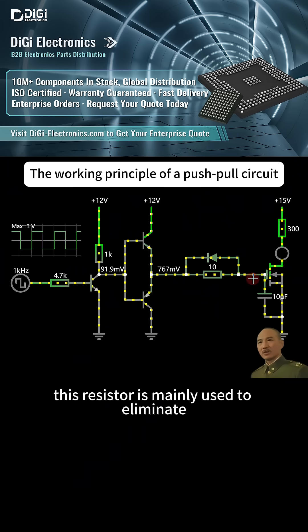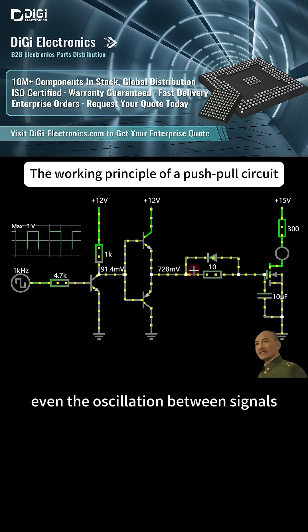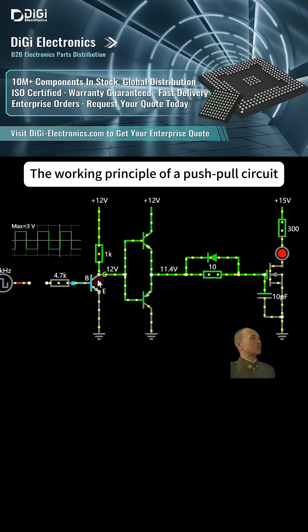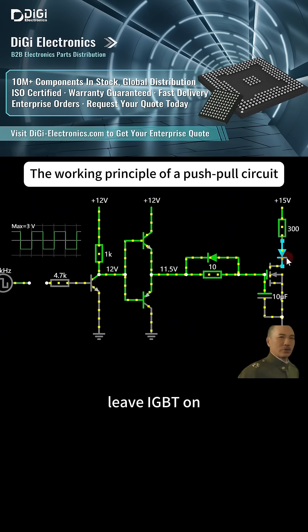This resistor is mainly used to eliminate oscillation between signals. When there is no control signal here, this is kept high by default, keeping IGBT on.